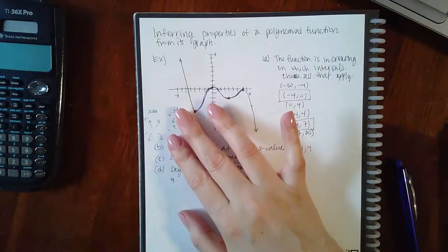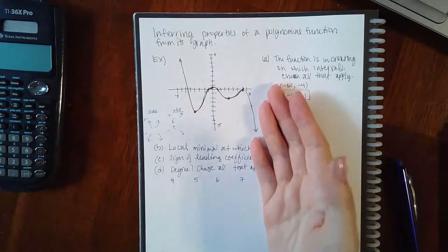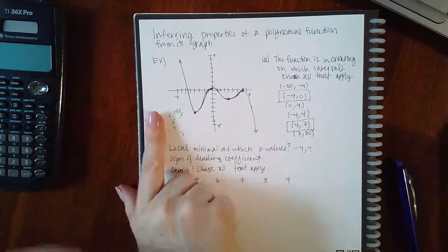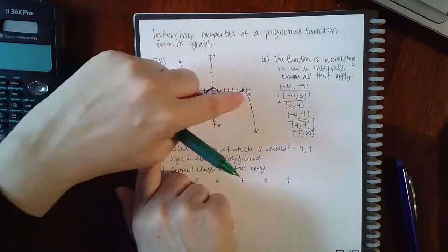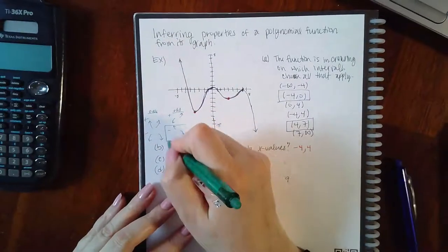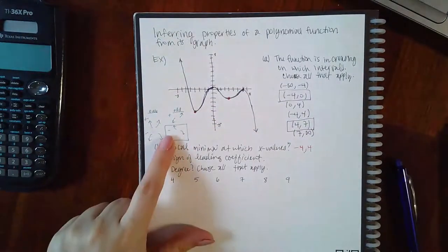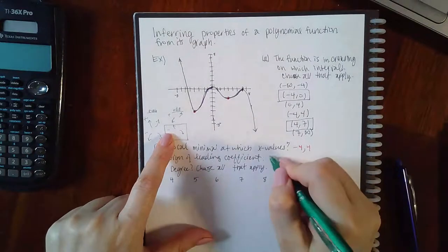Which kind of end behavior do I have? I have one of these because it's going one way to the left and a different way to the right. So it's not the even kind, it's an odd kind. And I'm going up to the left and down to the right, so it's going to be this one here, which means that my leading coefficient is going to be negative.